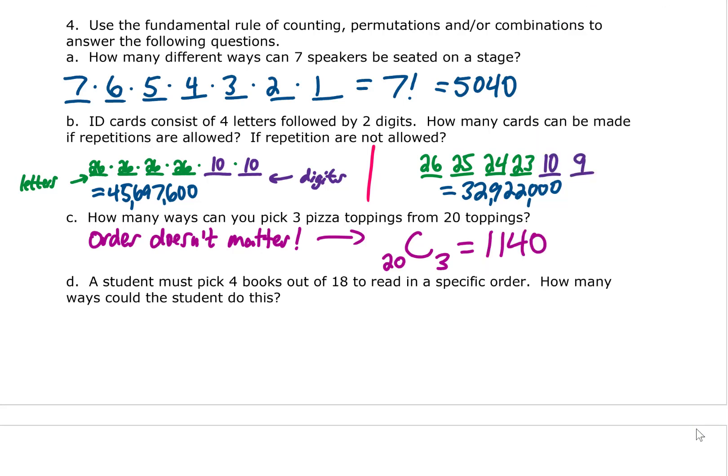The next question: a student must pick four books out of 18 to read in a specific order. Now this specific order thing tells us that order does matter. That means that we're going to use a permutation.